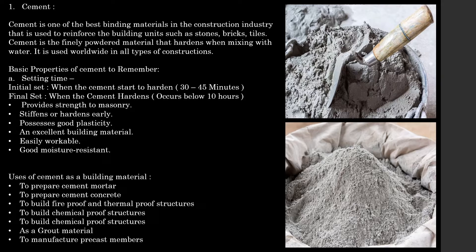For the final setting, the cement takes up to 10 hours to fully harden. It provides strength to the masonry, stiffens or hardens early, possesses good plasticity, and is an excellent building material — easily workable and good moisture resistant. Uses of cement: to prepare cement mortar, to prepare cement concrete, to build fireproof and thermal-proof structures, to build chemical-proof structures, as a grout material, and to manufacture precast members.